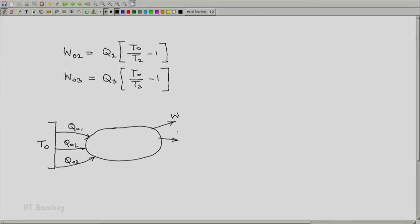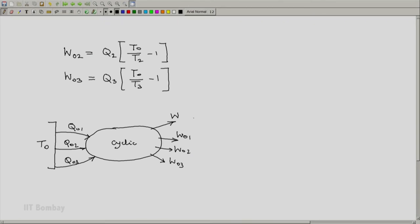It contains W01, W02, W03. This system is a cyclic device because it contains our original system which is cyclic, the three reversible machines which are also cyclic, and the three reservoirs which receive the same heat they reject. So they also go through a cycle. This also is a cyclic device.